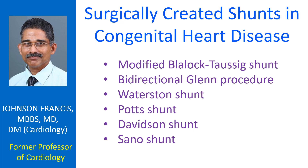Bidirectional Glenn procedure is an end-to-side anastomosis of the superior vena cava to the right pulmonary artery. This helps flow into both pulmonary arteries.